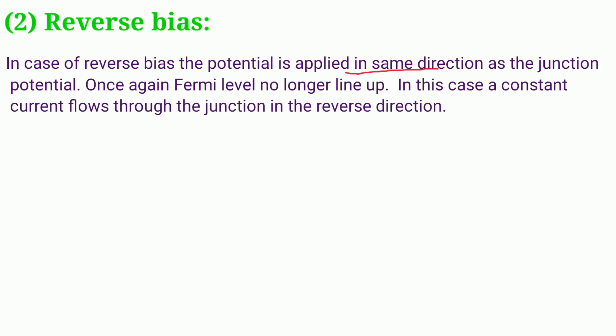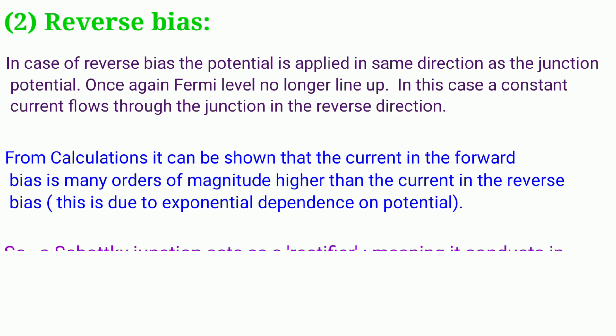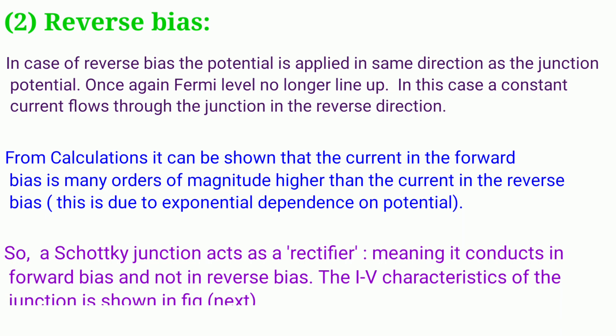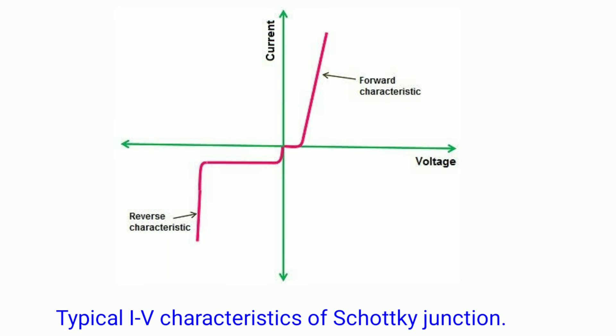In case of reverse bias, the potential is applied in the same direction as the junction potential. Once again, the Fermi levels no longer line up. In this case, a constant current flows through the junction in the reverse direction. From calculations, it can be shown that the current in the forward bias is many orders of magnitude higher than the current in the reverse bias. This is due to exponential dependence on potential. So a Schottky junction acts as a rectifier, meaning it conducts in forward bias and not in reverse bias. The IV characteristics of the junction is shown in this figure. Exponential increase is observed in the forward bias while there is a small current in reverse bias.